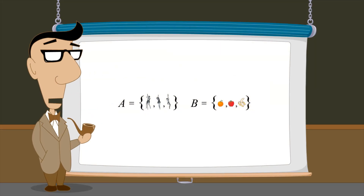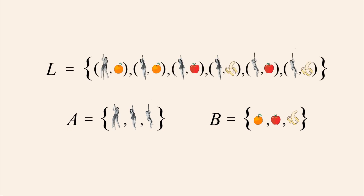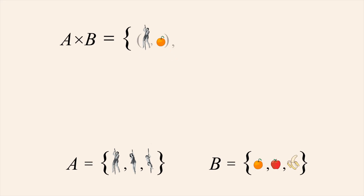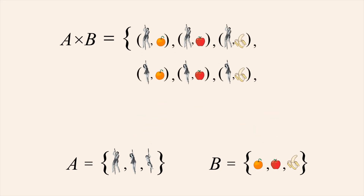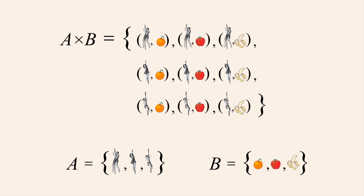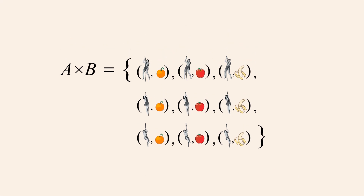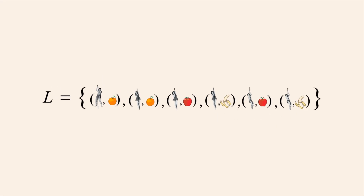You may recall from previous lectures that the Cartesian product of two sets is also a set of ordered pairs. Unlike relation L, the Cartesian product contains every possible ordered pair which can be created where the first element is a member of set A and the second element is a member of B. The Cartesian product of sets A and B therefore contains all nine possible ordered pairs, as opposed to the six contained in relation L. Of course, everyone in set A could have liked every fruit in set B, in which case relation L would have been the same as the Cartesian product.